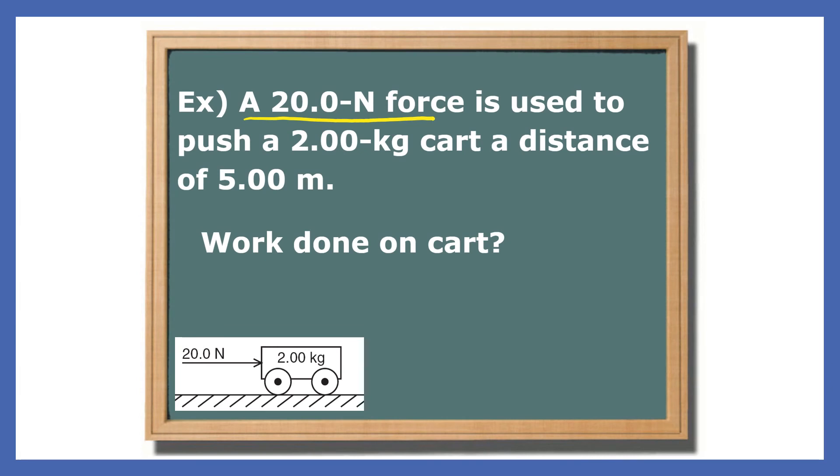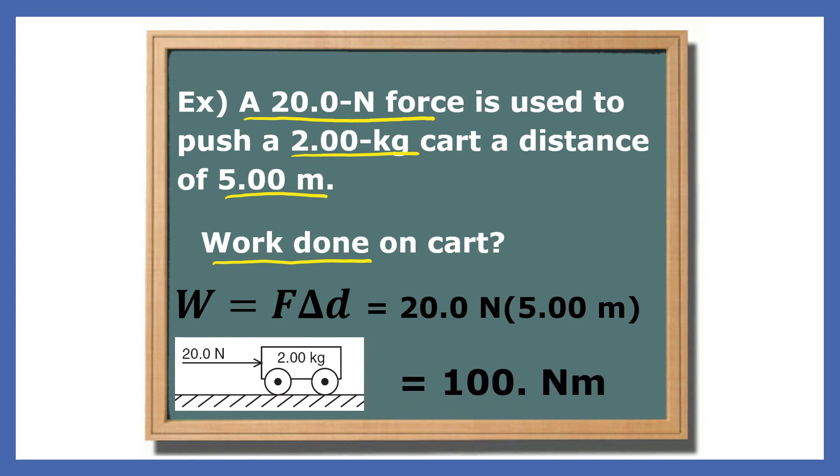Let's use the work equation. A 20-Newton force is used to push a 2-kilogram cart a distance of 5 meters. What work is done on the cart? The work equation is F equals delta D. The force given is 20 Newtons. The displacement is 5 meters. Of course, 20 times 5 is 100. The answer has three significant digits.